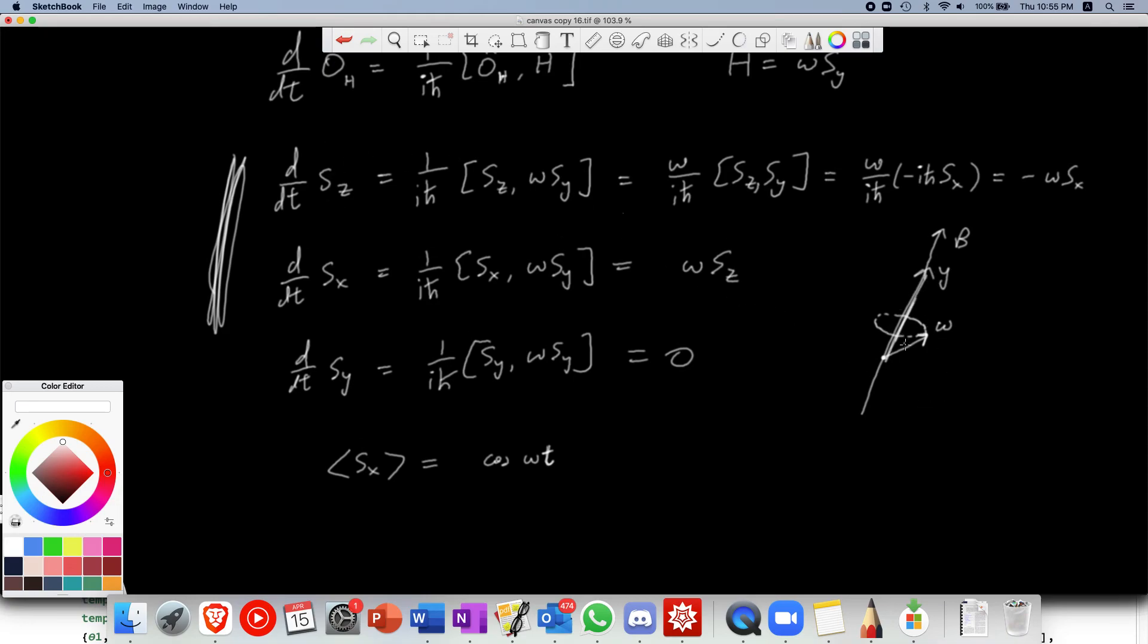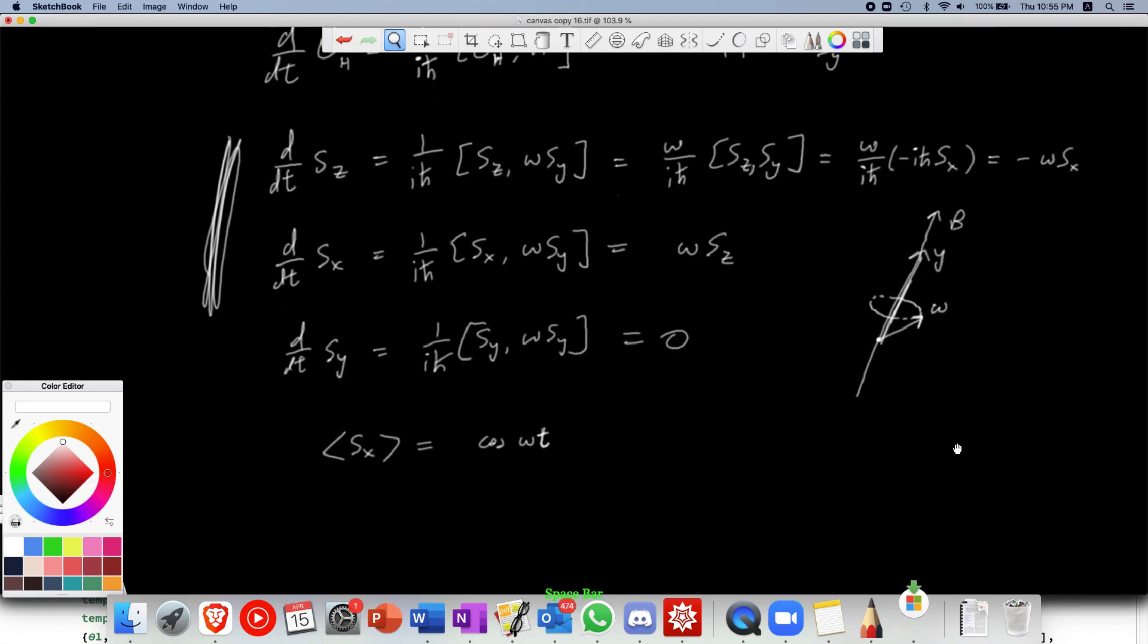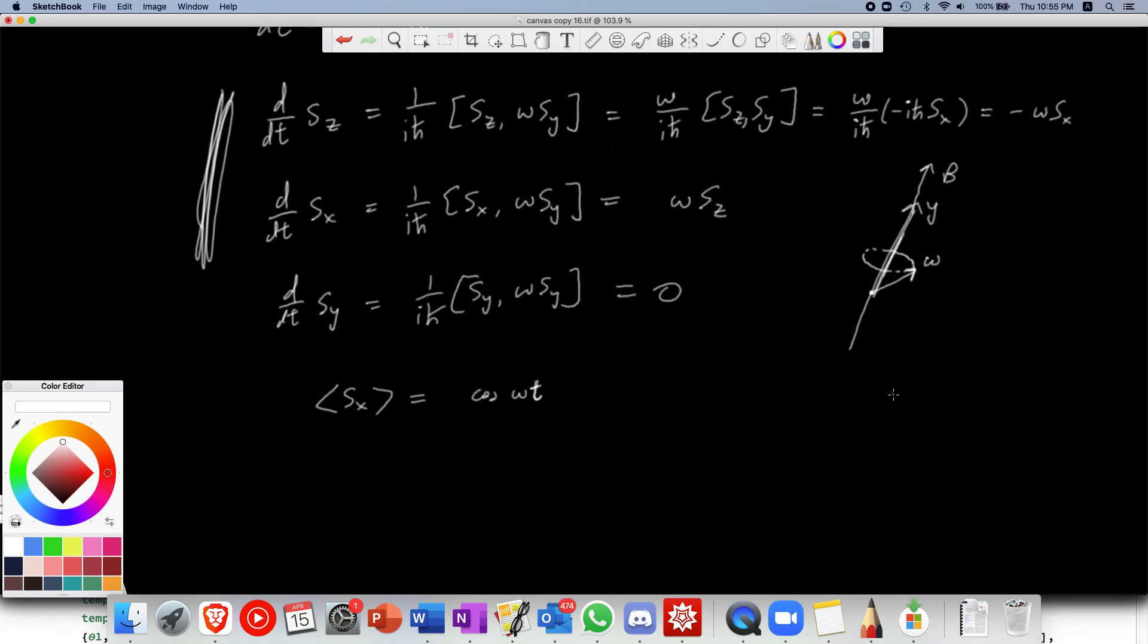So remember that in classical mechanics, we can also derive this result, this precessing result, I think it's called precession. So yeah, so there's a quantum, you see that we take that time expectation values, we take the expectation values of the operators, we do reproduce the classical results as expected.